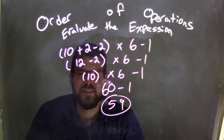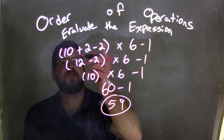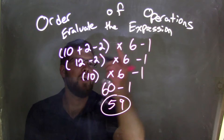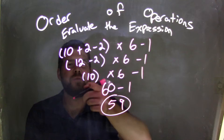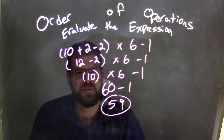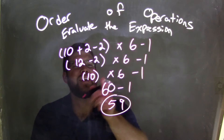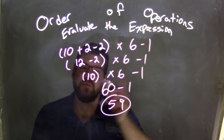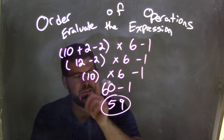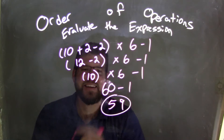And there we go. So again, start from the beginning. We take our parentheses: 10 plus 2 minus 2. We simplify — 10 plus 2 is 12. We bring it on the right side. 12 minus 2 is 10. Bring it on the right side again. Now, 10 times 6 is 60 — not 16, but 60 — because multiplication comes before subtraction. So 10 times 6 is 60, minus 1 is 59.